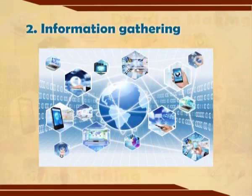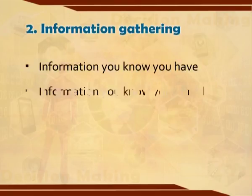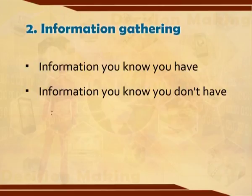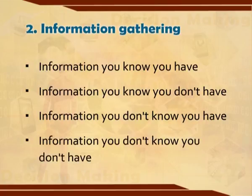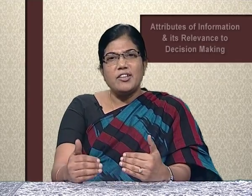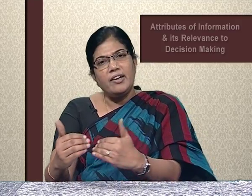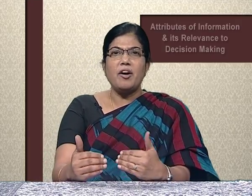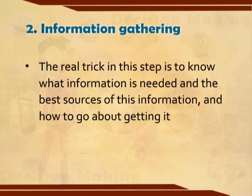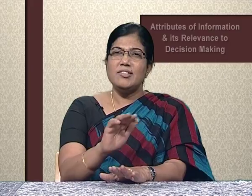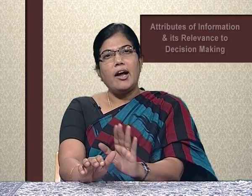Step 2 is information gathering. Information can be: information you know and you have, information you know and you do not have, information you do not know and you have, and information you do not know and you do not have. Most decisions require collecting pertinent information. Gathering relevant information is most essential. The real challenge is to know what information is needed, the best sources of that information, and how to go about getting it. This step involves collecting from both internal and external sources.